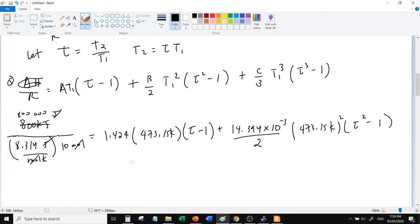C is negative 4.392 times 10 to the negative 6, over 3, times 473.15 kelvin cubed, times (tau cubed minus 1). At this point you can use a solver to solve for tau. Once you solve for tau, substitute it here to solve for T2.